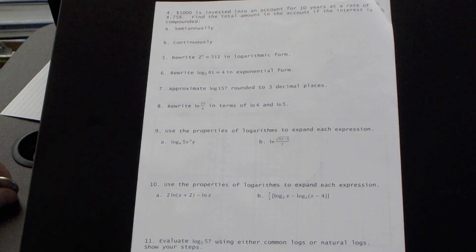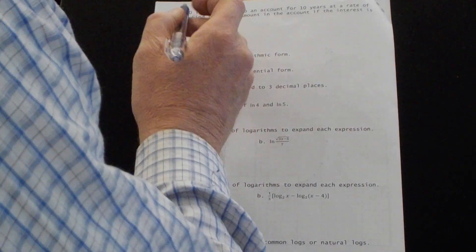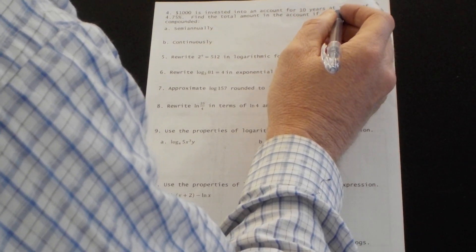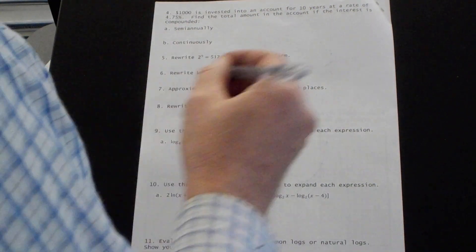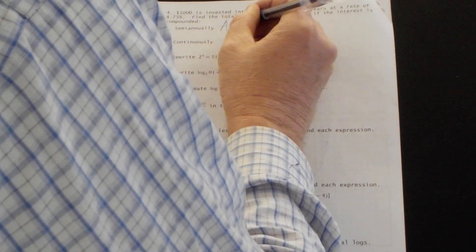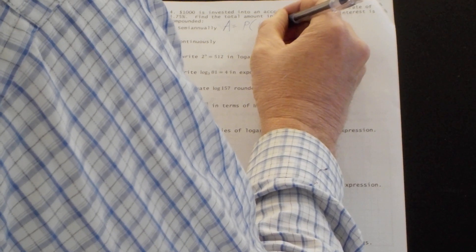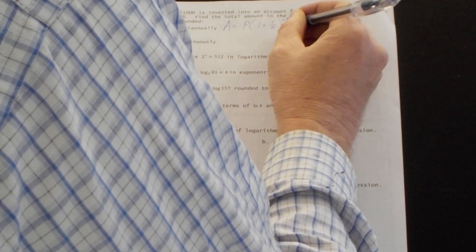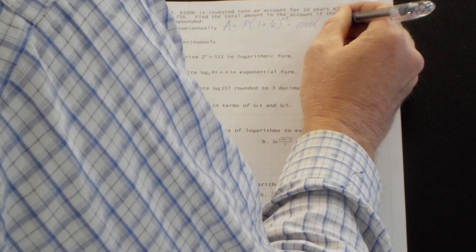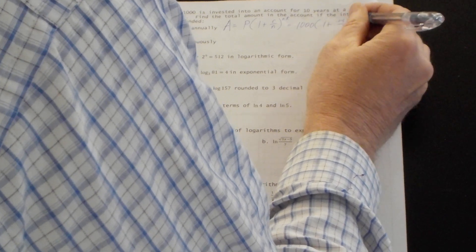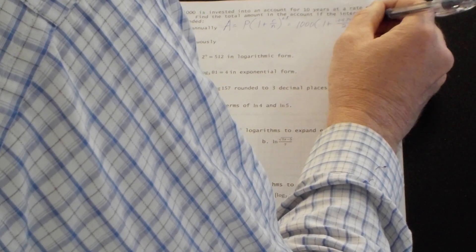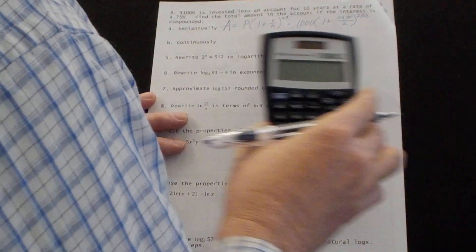I'm going to go ahead and maybe just try to finish this up on this last video here. One thousand dollars is invested into an account for 10 years at a rate of 4.75 percent. Find the total amount when the interest is compounded semi-annually. So you've got to remember this formula. The principal is one thousand dollars. One plus 0.0475. Semi-annually means two times a year. So put two there. And let's go two times 10 up here.